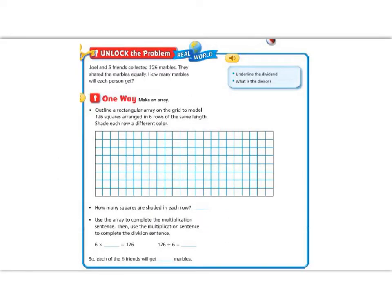Let's continue our lesson by starting with the unlock the problem. It says, Joel and five friends collected 126 marbles. They shared the marbles equally. How many marbles will each person get? Let's begin by underlining the problem. It says, How many marbles will each person get? The word each in this question tells me something good, but it doesn't tell me to multiply this time, because up above it says that they're going to share the marbles equally. That tells me that I need to divide. The last thing that we need to know is our numbers. We have 126 marbles and Joel and five friends. So that means we have six people.